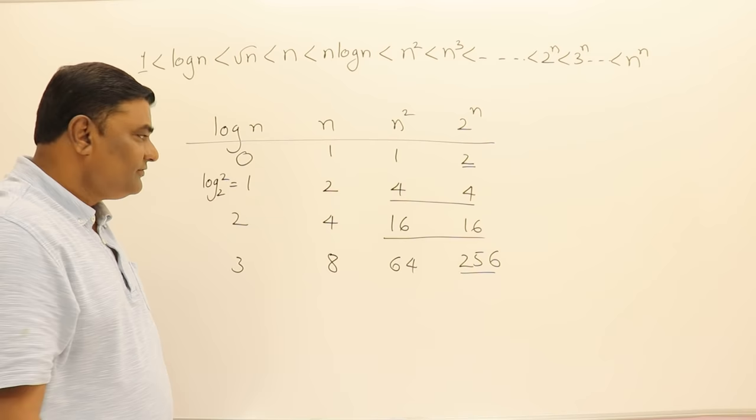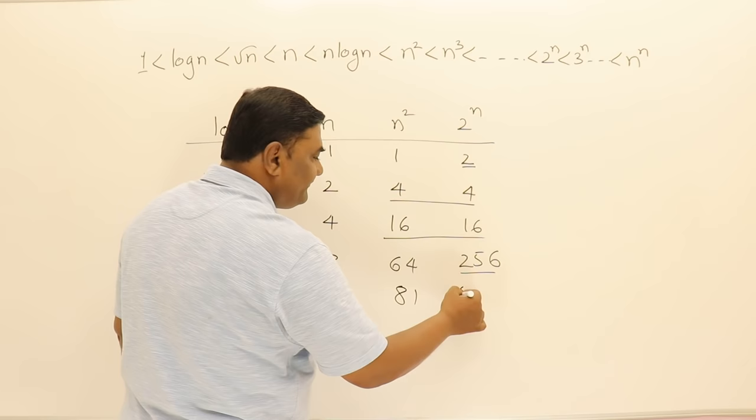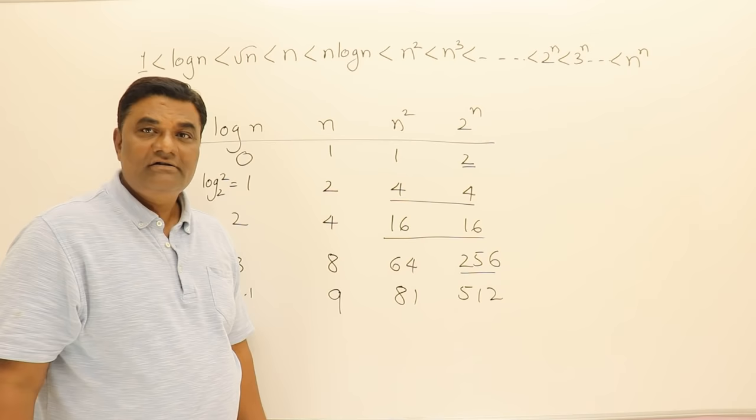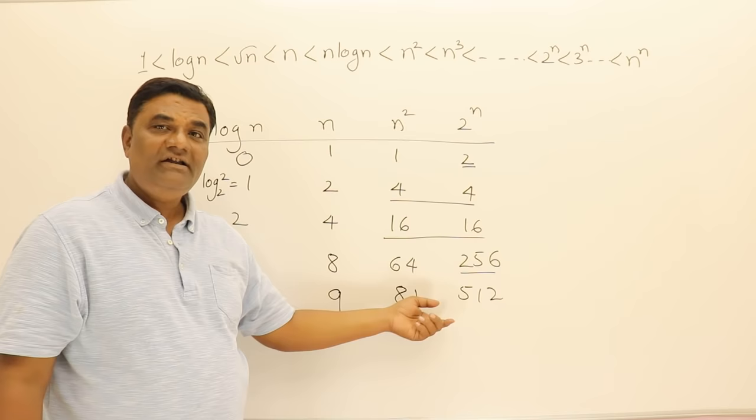So if I take 9 here then log of 9 maybe I may be getting 3.1 something but here 81 and this will be 512. 2 power 9 is 512. So around 16 or 15 is added here, but there you can see that there's a bigger change in the value. It's doubled again.